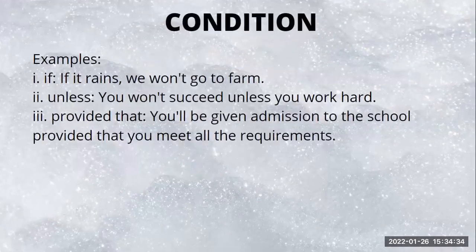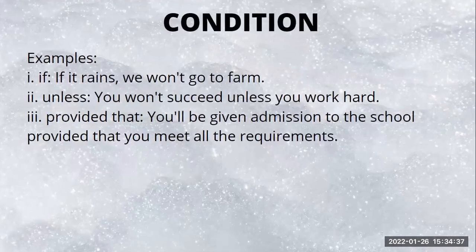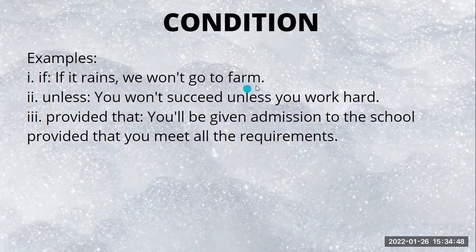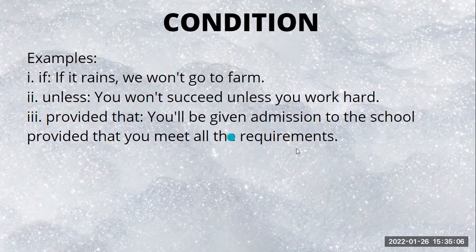The next type is the subordinating conjunction of condition — it indicates the condition for something to happen. Examples: 'if': 'If it rains, we won't go to the farm.' Then 'unless': 'You won't succeed unless you work hard.' Then 'provided that': 'You will be given admission to the school provided that you meet all the requirements.'